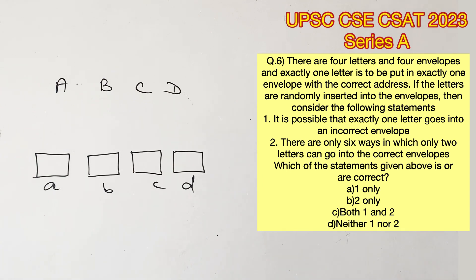So A has to go into a, B has to go into b, C has to go into c, and D has to go into d. First statement says it's possible that exactly one letter goes into an incorrect envelope.